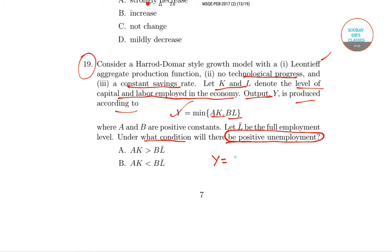In order to do this, first I will write down the things which are given: Y equals minimum of AK comma BL, where A and B are positive constants.